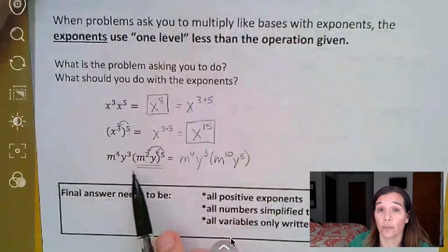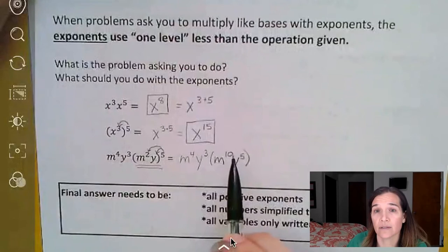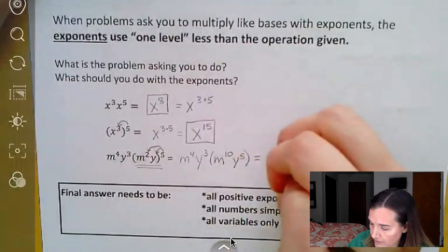Now we've done the exponent part. Now we're going to go back and multiply the two together. When you are multiplying bases with exponents, you actually add the exponents. Brings us back to one of these.